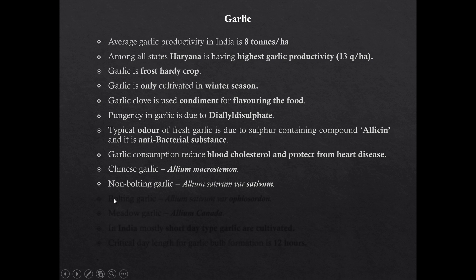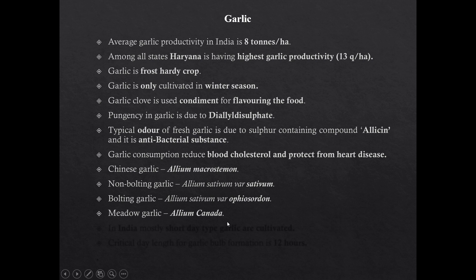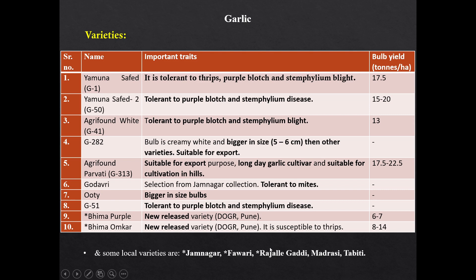Non-bolting garlic is Allium sativum sativum. Bolting garlic is Allium sativum ophioscorodon. Mito garlic is Allium canadense. In India, mostly shorter-day type garlic cultivars are grown. Critical day length for garlic bulb formation is 12 hours. Varieties of garlic: Yamuna Safed G1 is tolerant to thrips, purple blotch, and stem nematode disease. Yamuna Safed G2 and G50 are tolerant to purple blotch and stem nematode disease. Agrifound White G41 is also tolerant to purple blotch and stem nematode disease. G282 has bigger bulb size and is suitable for export.